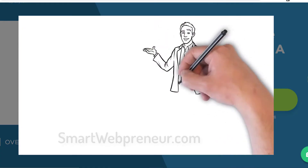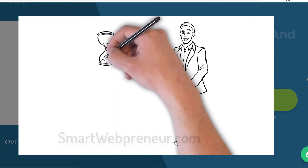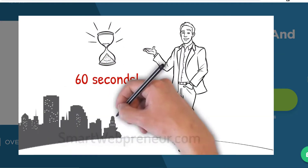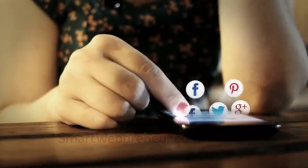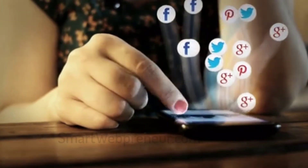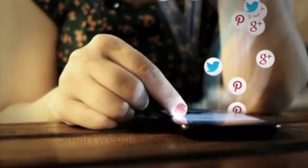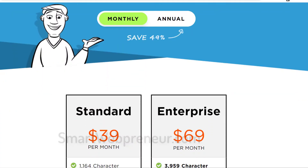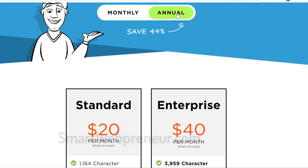At present, there seem to be two options available to get the Doodly software. One is to get it through the one-time offer, which is occasionally made available through special promotions run by the Doodly team on different social media platforms. The other option is to get Doodly under the regular plan.